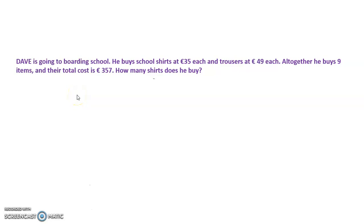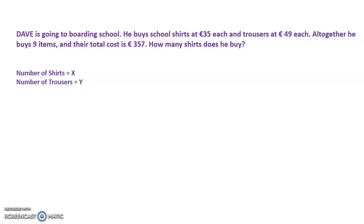Let us do this problem. In this type of word problem, we have to observe what details are given and what we have to assume as variables x or y. Here, he has given the cost of each shirt, cost of each trouser, total number of shirts and trousers bought, and total cost of all of them. He didn't give the number of shirts or trousers bought, so we will assume number of shirts bought is x and number of trousers bought is y.